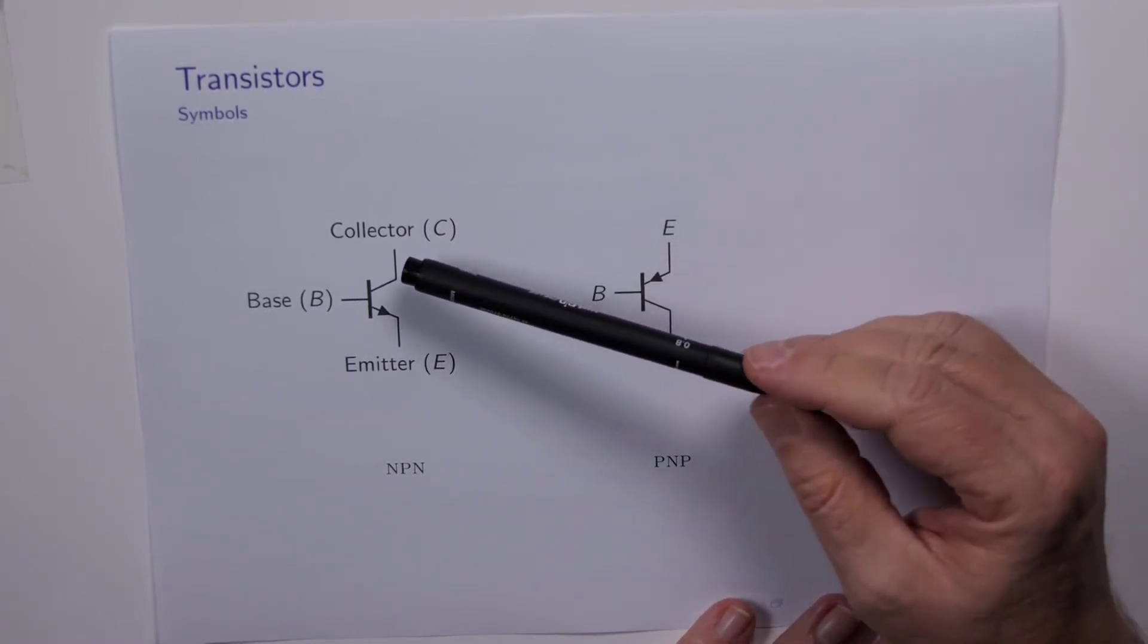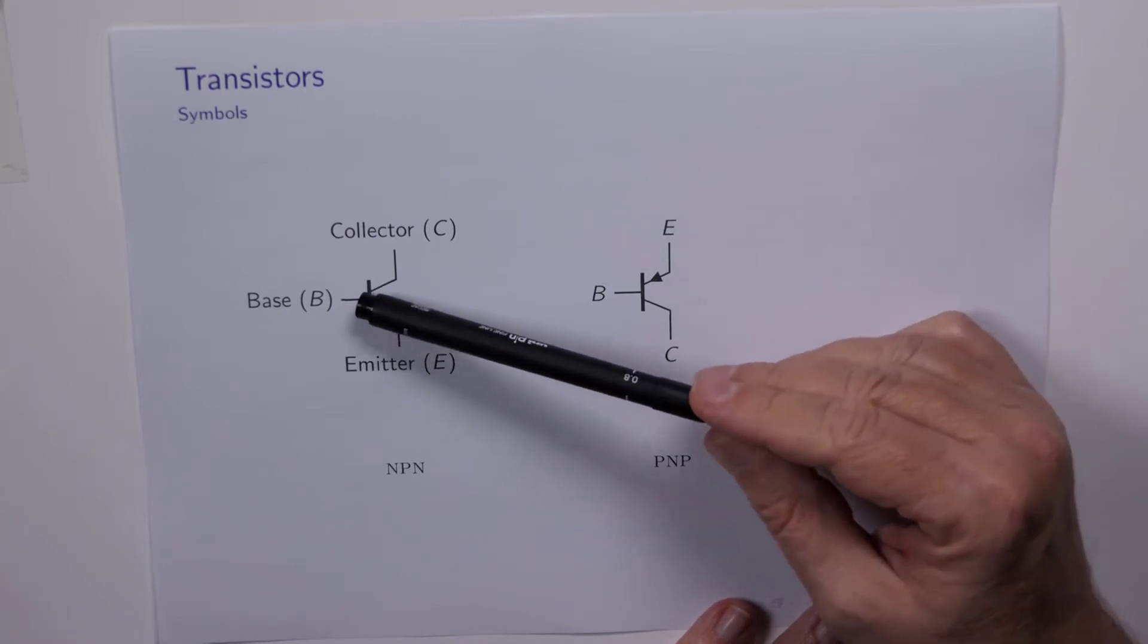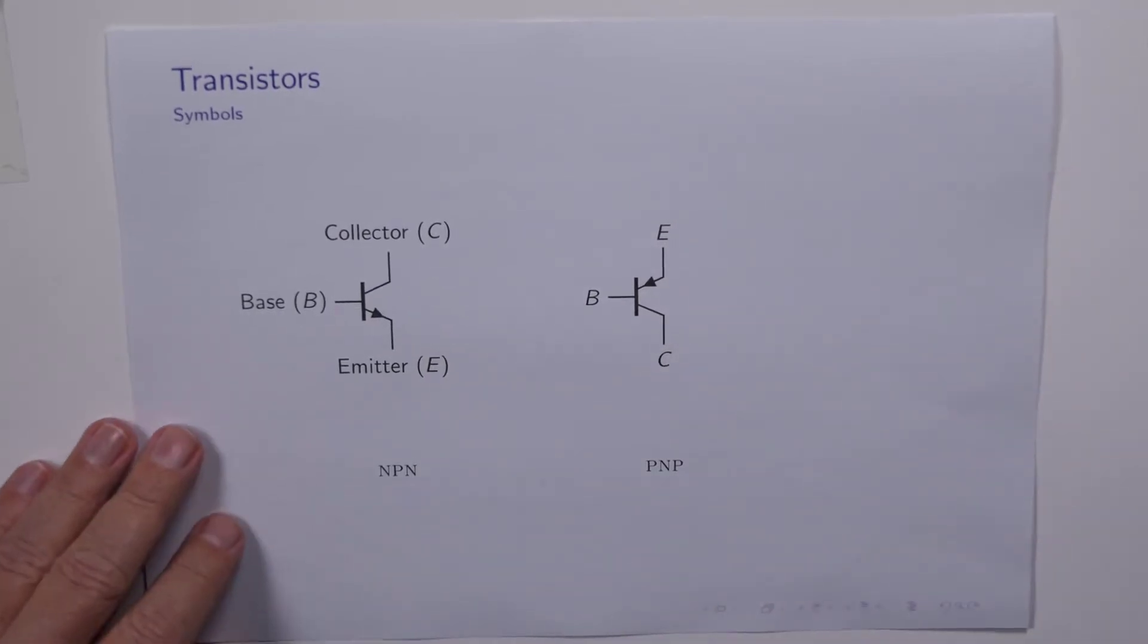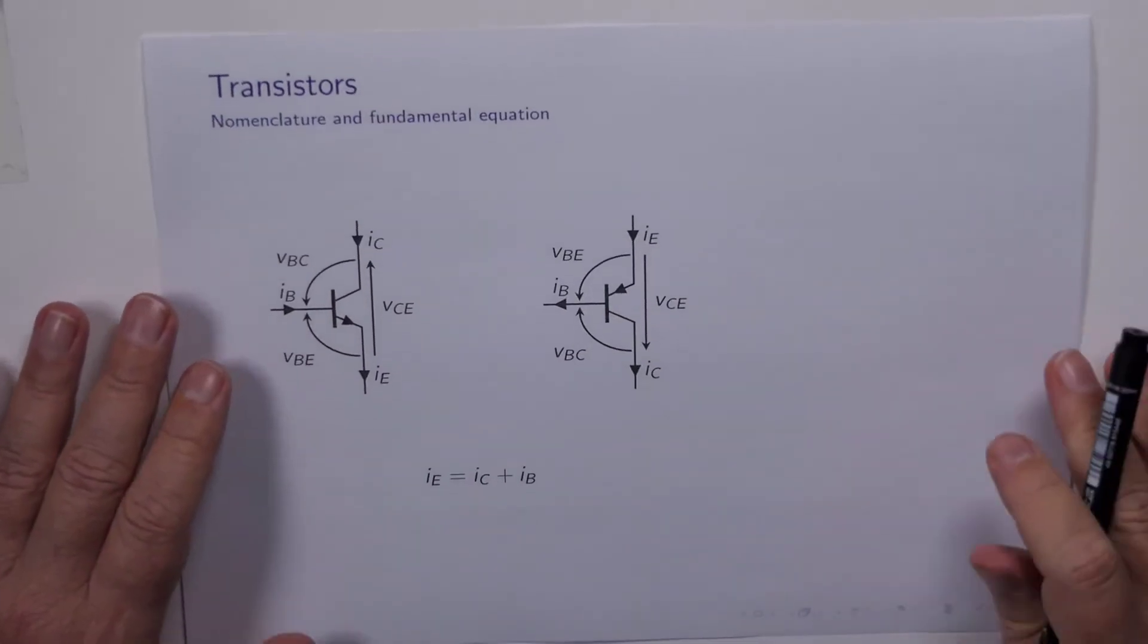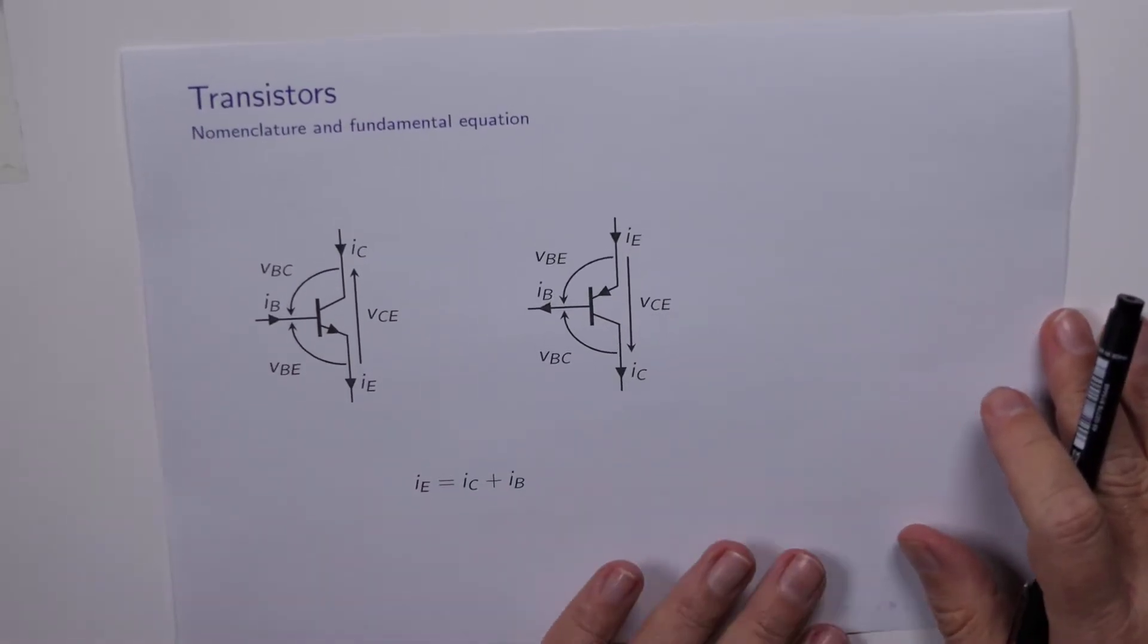Now let's talk in more detail about the terminal voltages and currents that we can have, because obviously what we'd like to do is to start to build up the terminal characteristics of this device, but we have to agree on some nomenclature. So here we go.